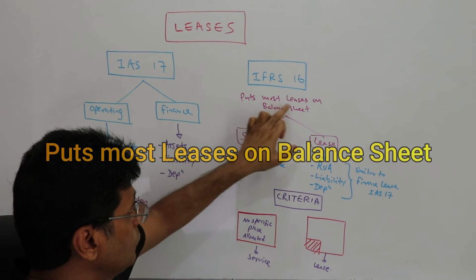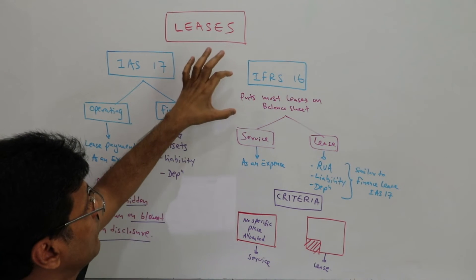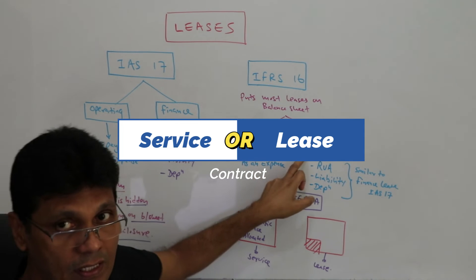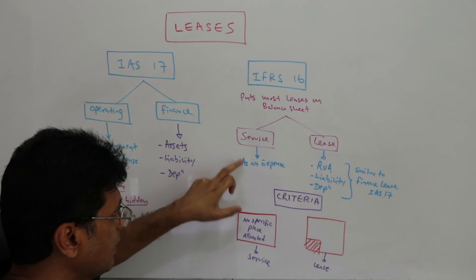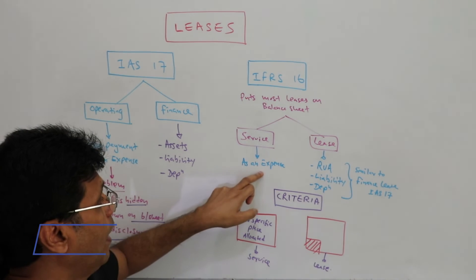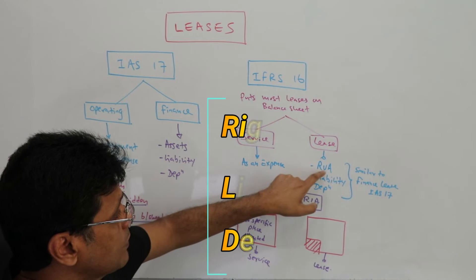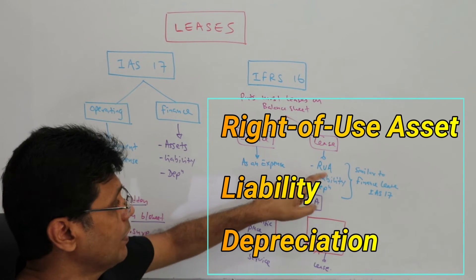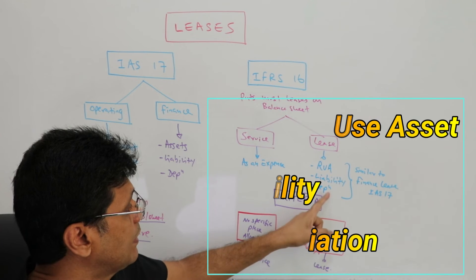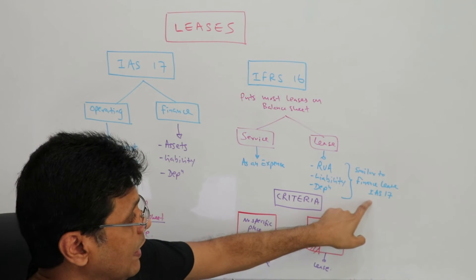IFRS 16 puts most leases on the balance sheet, removing the discrepancies of IAS 17. Under IFRS 16, you must first identify whether the contract is a service contract or a lease contract. If it is a service contract, charge the rental payment as an expense in the income statement. If it is a lease contract, you need to recognize a right-of-use asset, a liability, and charge depreciation — similar to the finance lease treatment under IAS 17.